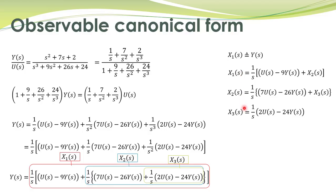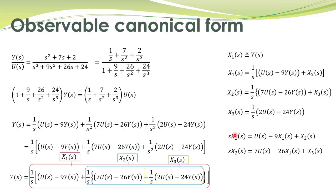Once we have these equations, we can further rearrange them. For the first equation, we simply bring s to the left-hand side, with U(s) minus 9Y(s) on the right — and since Y(s) equals X1(s), we write X1(s) instead. Rearranging the second equation similarly gives sX2(s) equals 7U(s) minus 26X1(s) plus X3(s). After performing these procedures on the transfer function, we finally obtain three equations written in the Laplace domain.